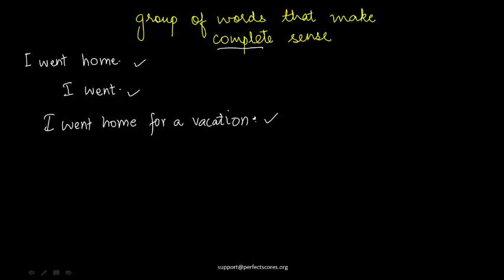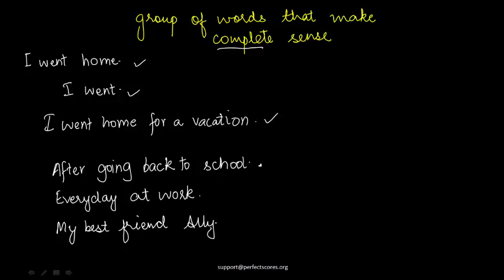Now let's look at examples where you may think it's a group of words that makes sense, but those words don't make complete sense. Look at the first example: 'After going back to school.' You are able to make some sense — someone is going back to school — but you don't know who that person is. There is a question left unanswered. That means it is not making complete sense, so it is not a sentence.